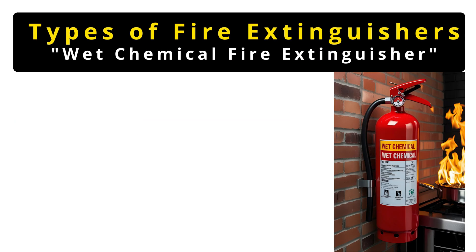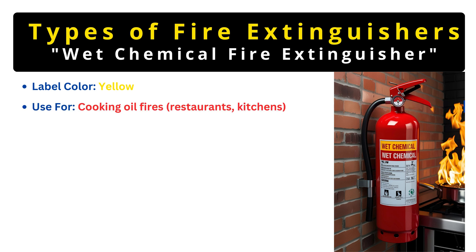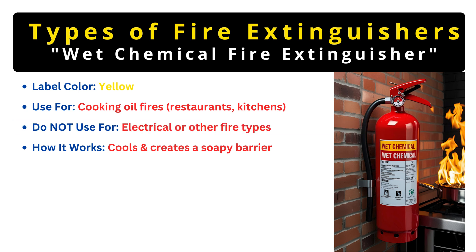Finally, we have the wet chemical extinguisher, recognizable by its bright yellow label. This one is specialized for Class K fires — kitchen fires involving cooking oils and fats. If you've ever seen a deep fryer catch fire, this is the extinguisher you'd want. It works in two ways: first, it cools the burning oil, and second, it creates a soap-like barrier that prevents re-ignition. Never use it on anything else — it's not designed for electrical fires, flammable liquids, or ordinary combustibles. Unless you're dealing with a kitchen fire, leave this one in its designated spot.